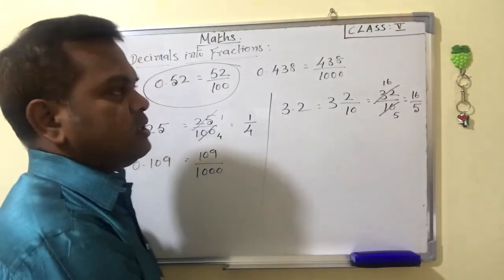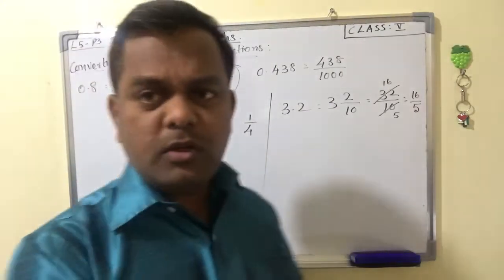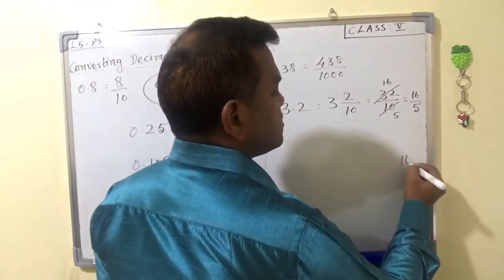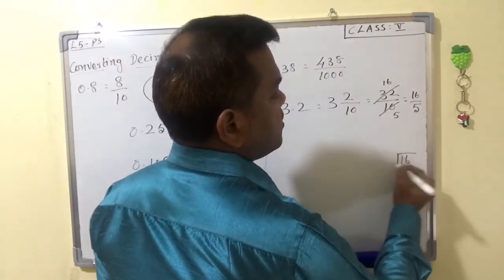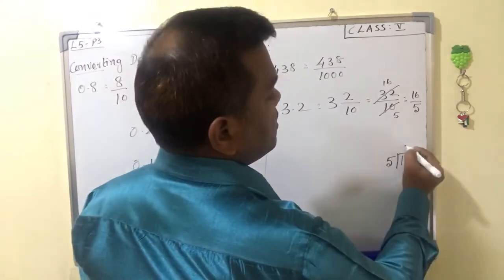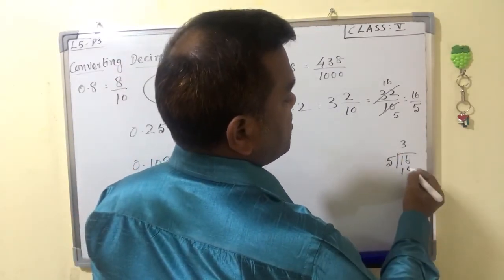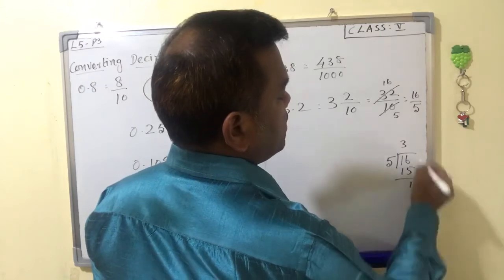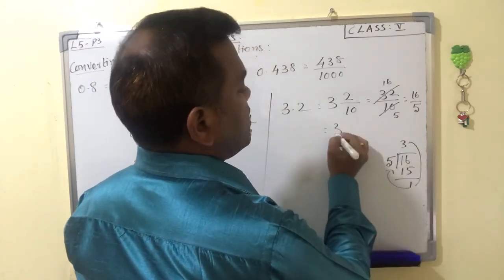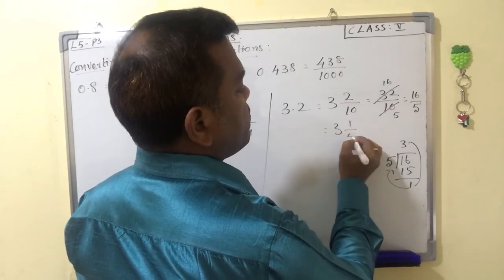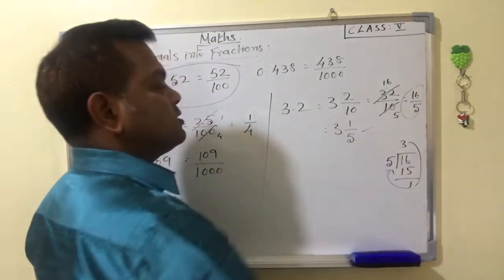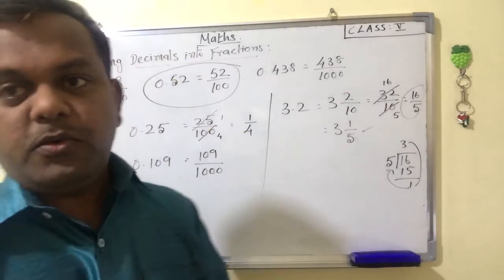16 by 5. Otherwise if possible, we can again simplify or convert into a mixed number. 16 by 5: 3 times 5 is 15, balance 1. So the mixed number is 3 and 1 by 5. This is the proper answer.